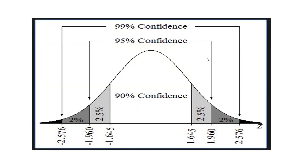The same is applicable for the 95% confidence interval — from minus 1.960 to plus 1.960. The area in between is the acceptance range, and beyond this is the rejection region. Similarly, for the 99% confidence interval, minus 2.576 and plus 2.576 is the acceptance region, and beyond this is the rejection region.